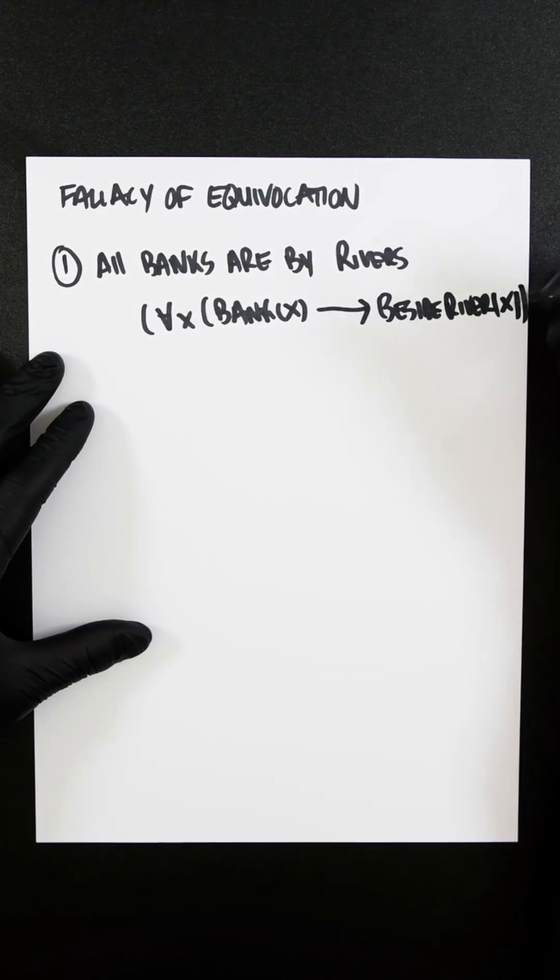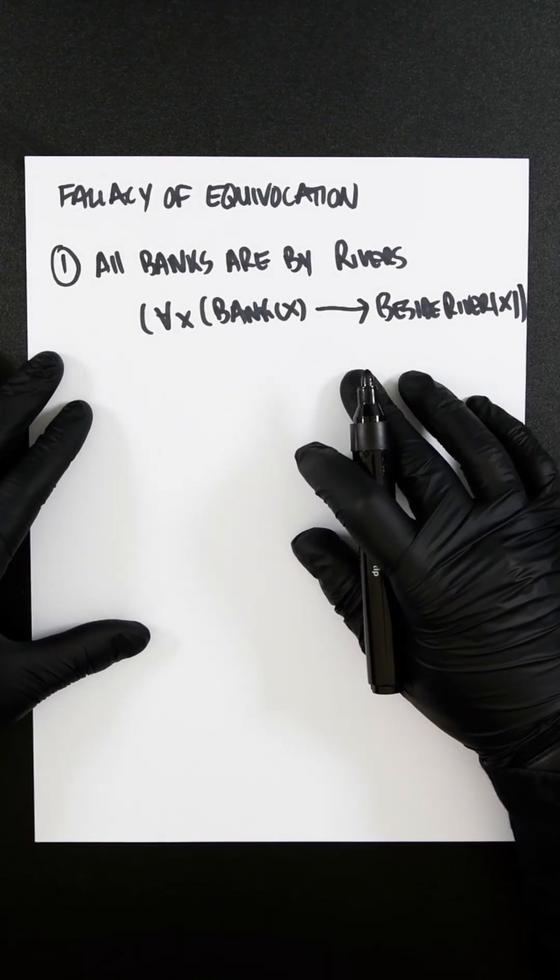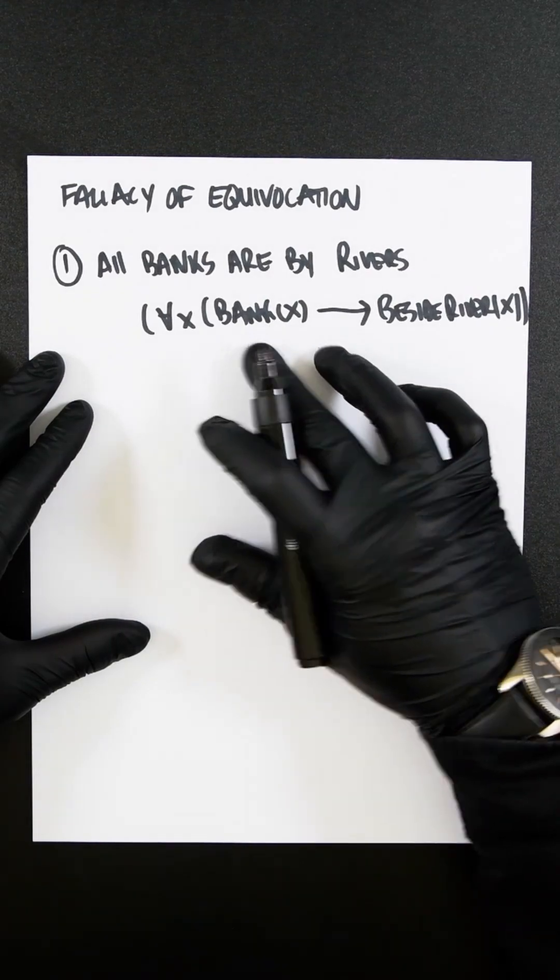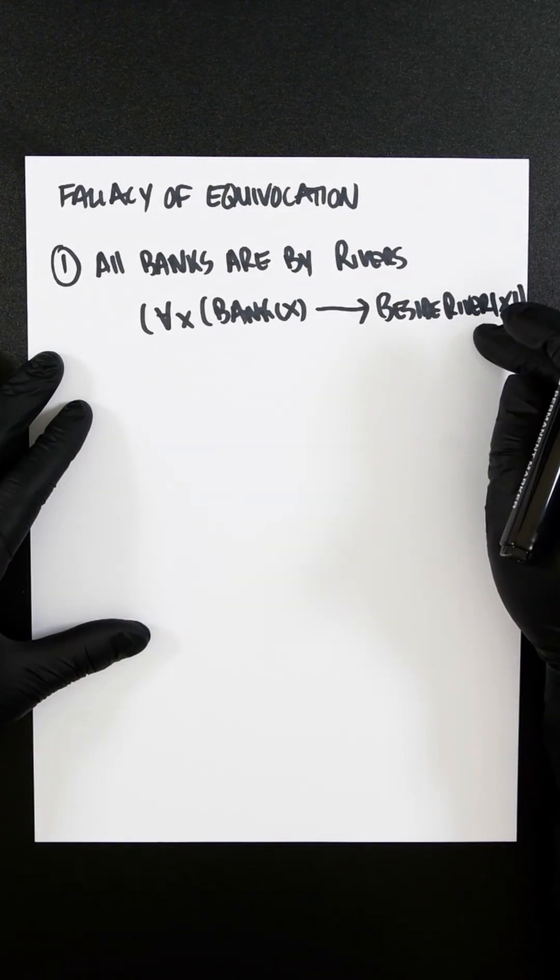I should have a third one here, but I can't fit it in. So this means that if x is a bank, then x is beside a river.